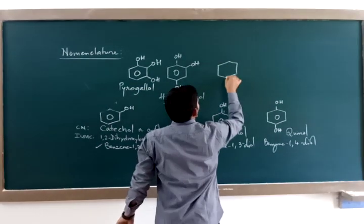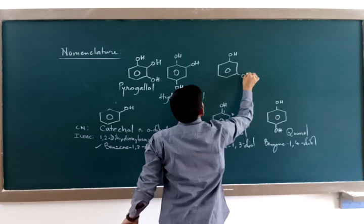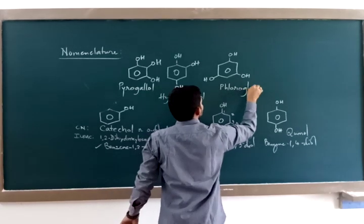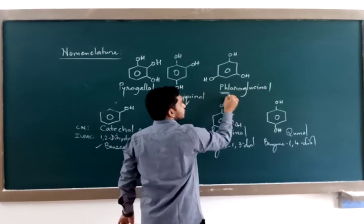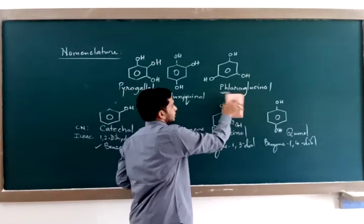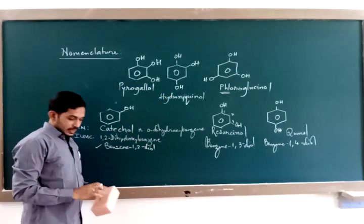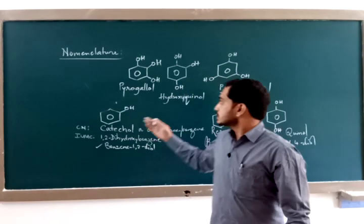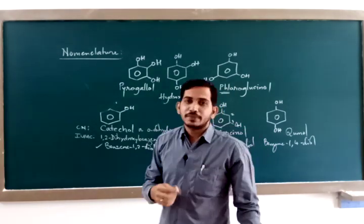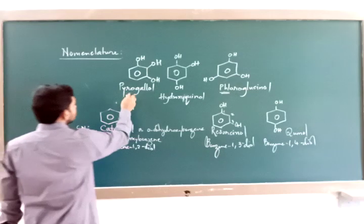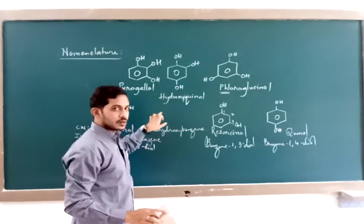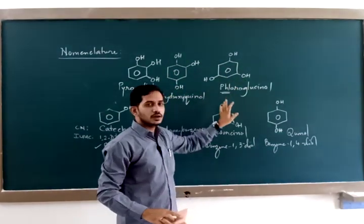Another trihydric phenol compound is called phloroglucinol. This should not be confused with fluorine — it is phloroglucinol, not fluoroglucinol. The names and structures are important from an exam point of view. The IUPAC names are: benzene-1,2,3-triol, benzene-1,2,4-triol, and benzene-1,3,5-triol respectively.